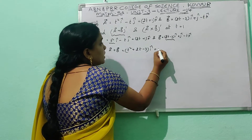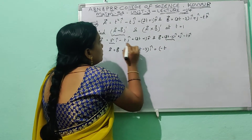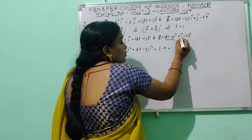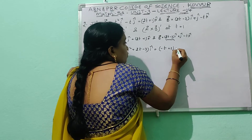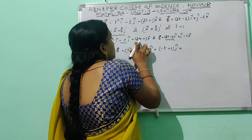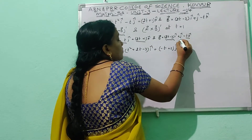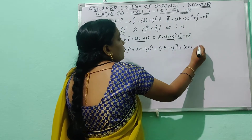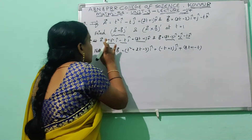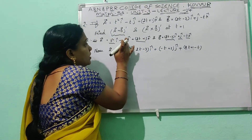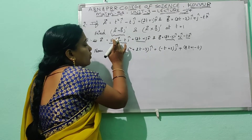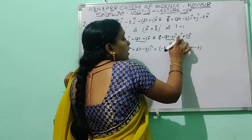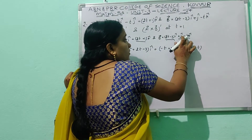For the ĵ component: ā has coefficient −t and b̄ has coefficient 1, so the ĵ term is (1 − t) ĵ. For the k̂ component: ā has coefficient (2t+1) and b̄ has coefficient −t, so the k̂ term is (2t+1−t) = (t+1) k̂. Therefore ā + b̄ = (t²+2t−3) î + (1−t) ĵ + (t+1) k̂.